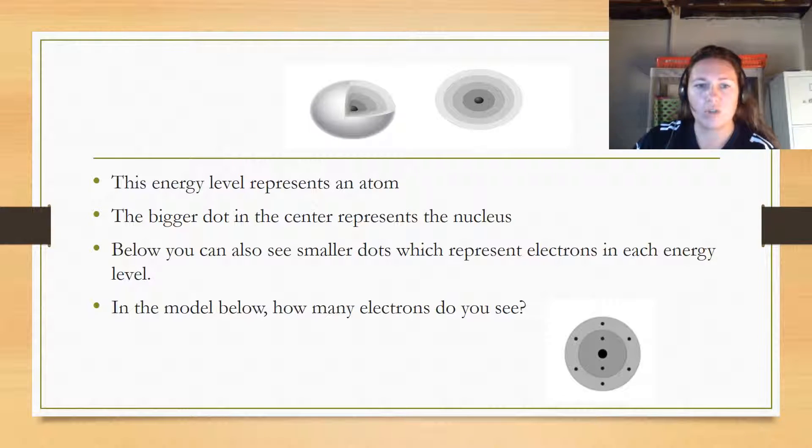The energy levels represent an atom. The bigger dot is the nucleus, and in this picture down here you can see that smaller dots represent the electrons in each energy level. So how many electrons do you see here? There are two energy levels: the one in the center and this one right here. Count them up.